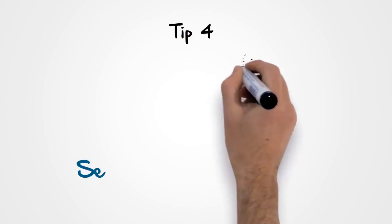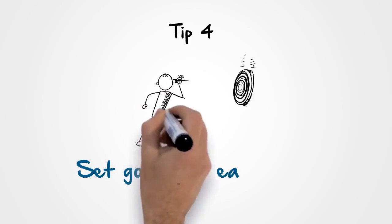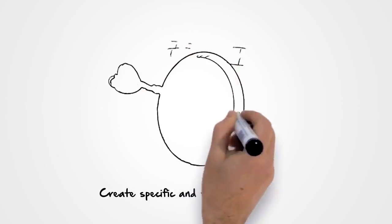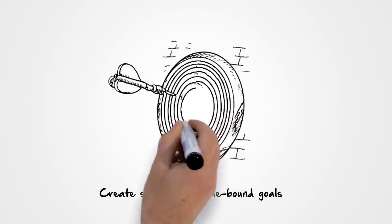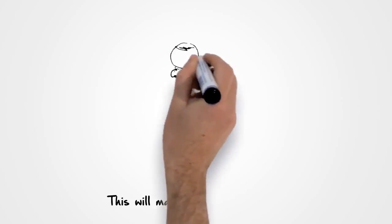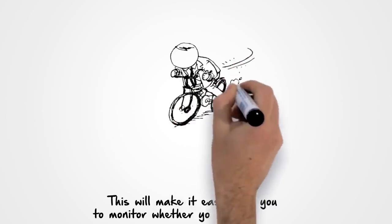Tip four: Set goals for each area. Create specific and time-bound goals that will help you to move closer to achieving your dream. This will make it easier for you to monitor whether you're on track.